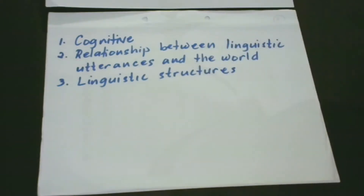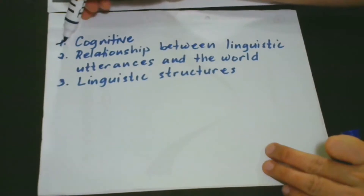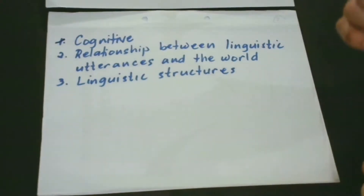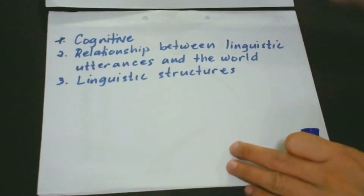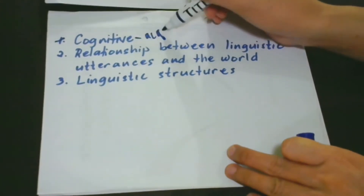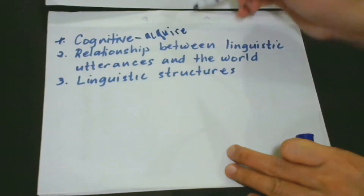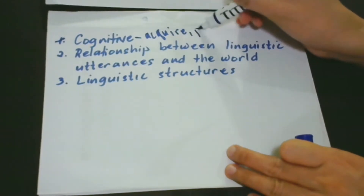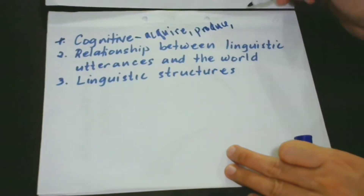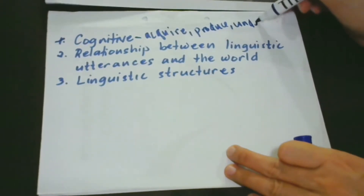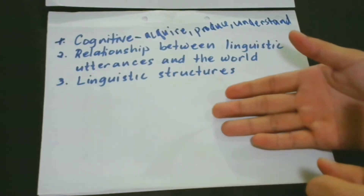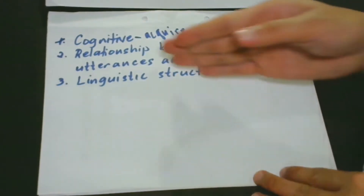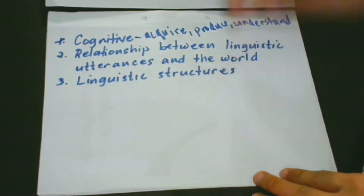The first aspect is that it is cognitive. Because cognition is involved, this aspect deals with our capacity to acquire — do you remember the first word you ever spoke? — to produce, and of course, because we are human beings with a brain, to understand spoken language or natural language. So it is cognitive because it deals with our capacity to acquire, produce, and understand a certain language.